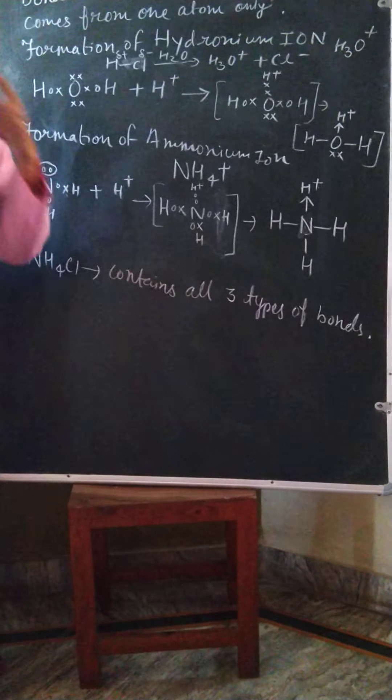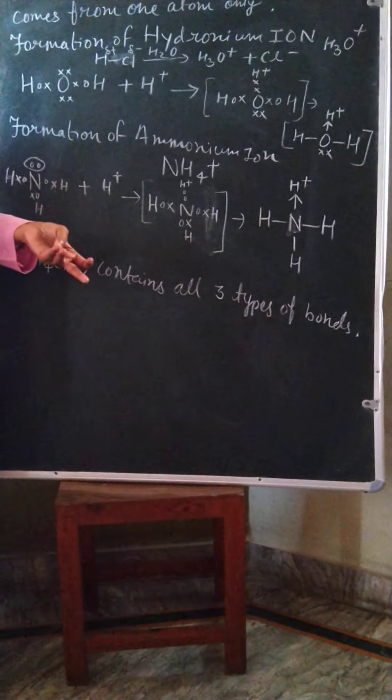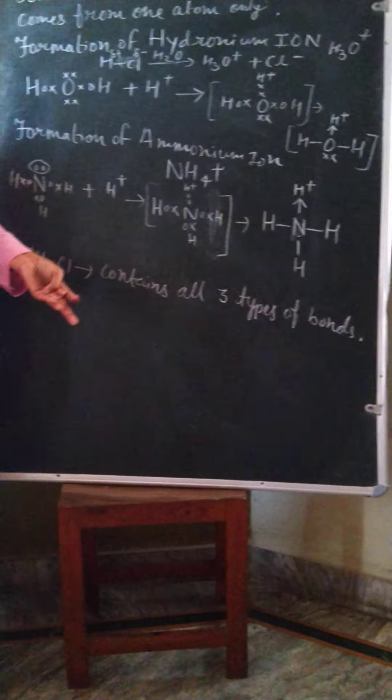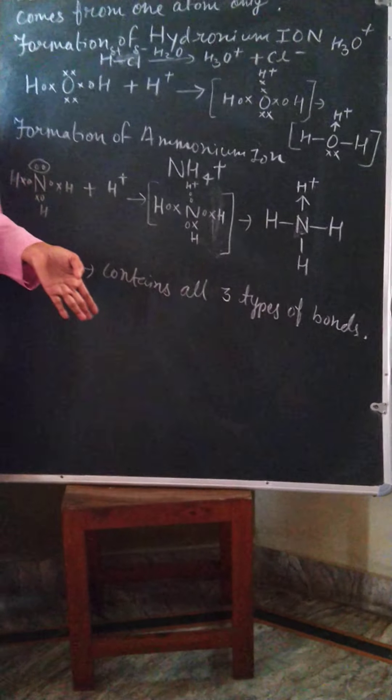You can remember one example: ammonium chloride contains all three types of bonds — ionic bond, covalent bond, and coordinate bond. Thank you, that's all for today.